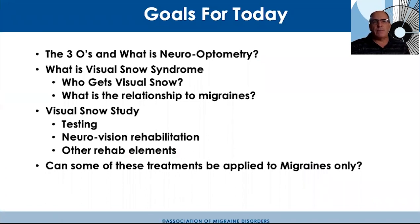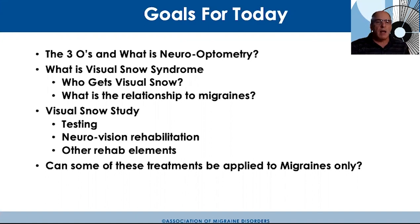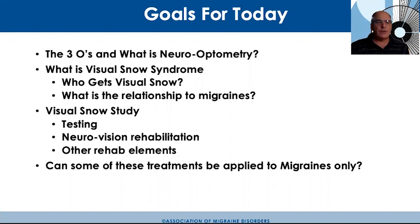I wanted to start off with what I call the three O's of optometry, ophthalmology, and opticianry, because there's a lot of confusion out there. Then we'll talk about what visual snow syndrome is, who gets it, and its relationship to migraines. We'll also discuss a study we've been doing in our office over the last eight or nine months, the testing involved, and how we're doing neurovision rehabilitation to help remediate symptoms. And we'll consider whether some of these treatments can be applied to migraines only.